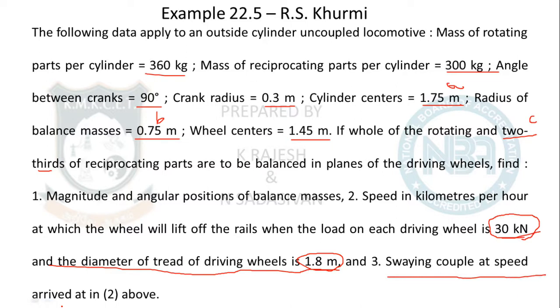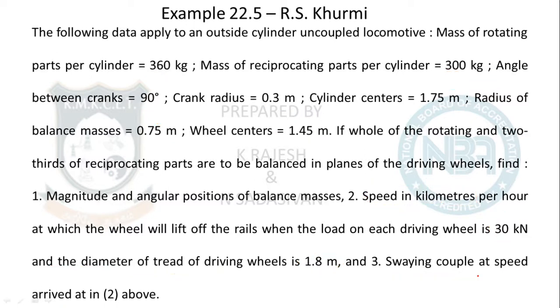Also find the swaying couple at the speed arrived at in the above equation. You are arriving at a speed, and the question asks: what is the swaying couple at that speed? These are the questions. I believe all of you have understood the question.